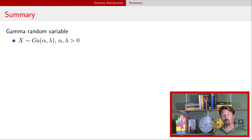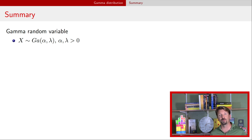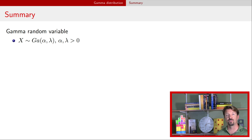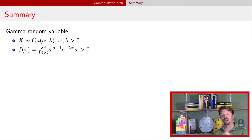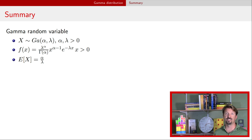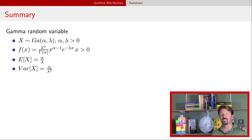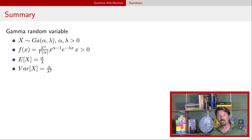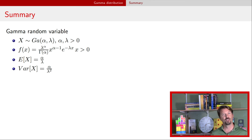So we introduced the gamma random variable. It has two parameters — in this case, shape and rate — both of which need to be positive. The gamma random variable has support over the positive real numbers. The expectation is the shape over the rate, and the variance is the shape over the rate squared. In the next video, we're going to talk about the inverse gamma distribution. Hope to catch you there.